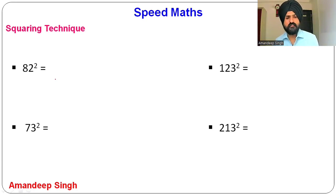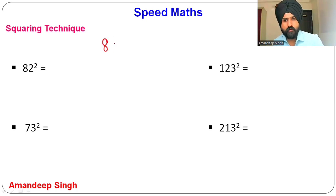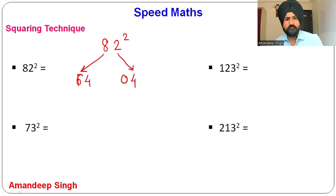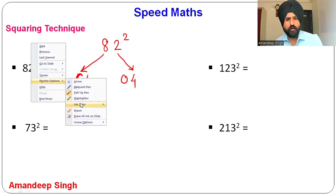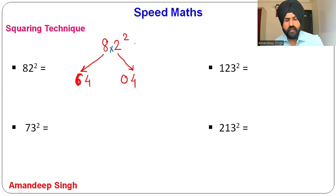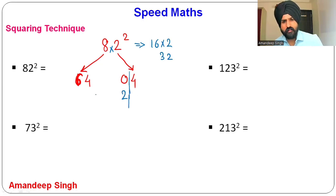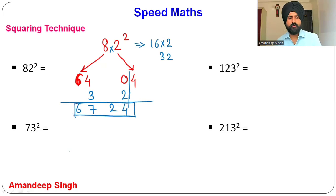Now let's look at a general technique for numbers not close to 50 or 100, like 82² or 73². For 82²: square each digit — 8² = 64, 2² = 04. Then multiply the digits: 8 × 2 = 16, double it = 32 (ignore the units place, so write 3). Add: 64 + 3 = 67, bring down 2 and 4. Answer: 6724.